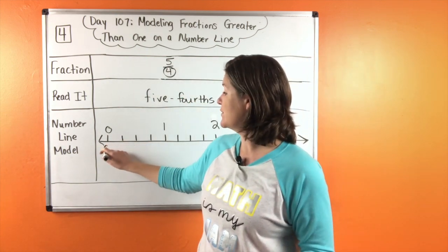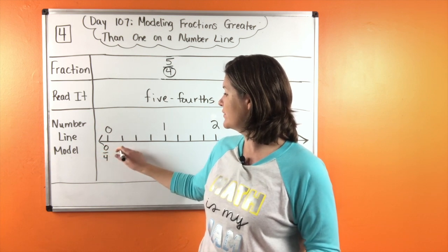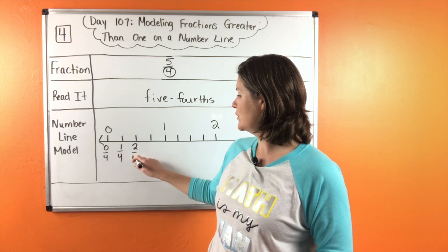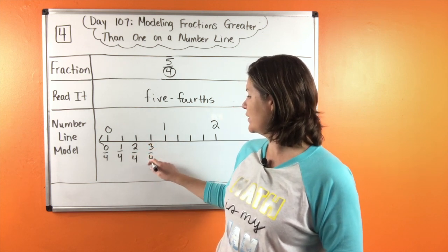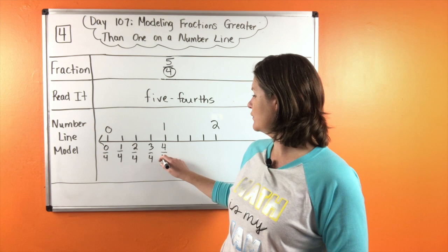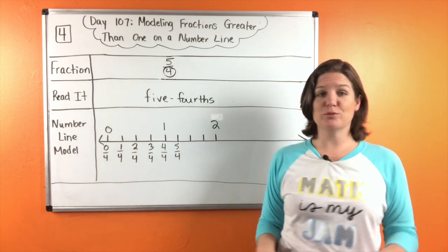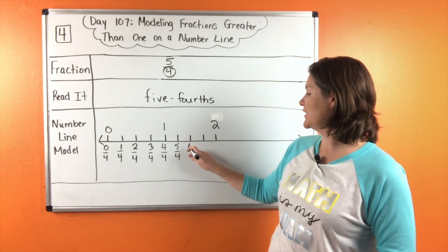So I'm going to start here with zero fourths, one fourth, two fourths, three fourths, four fourths, five fourths. That's where I needed it to be. And I'm going to keep going.